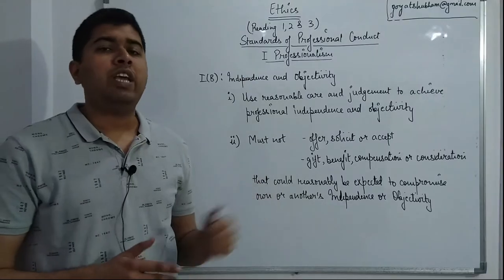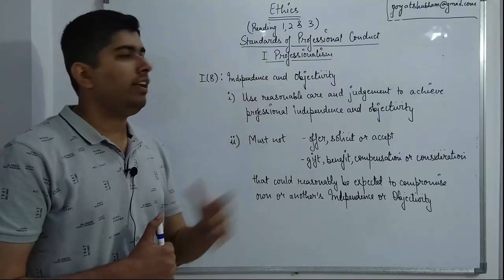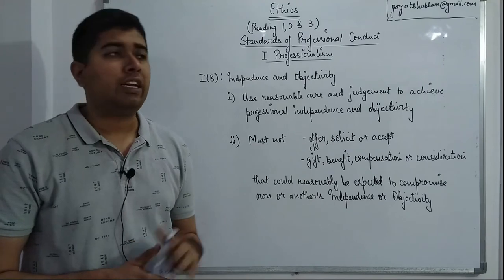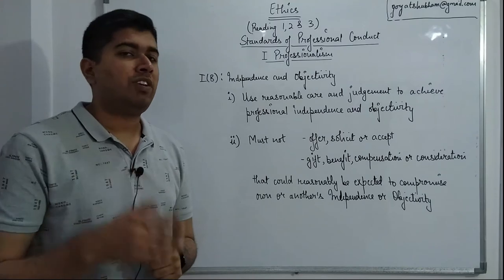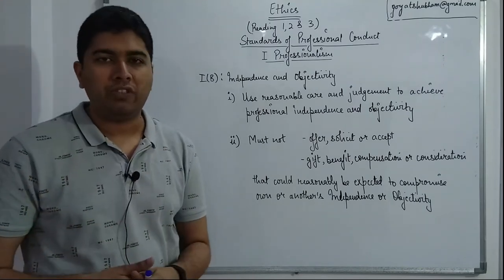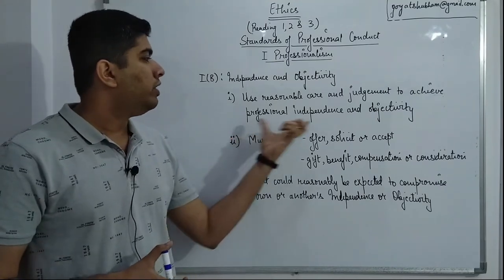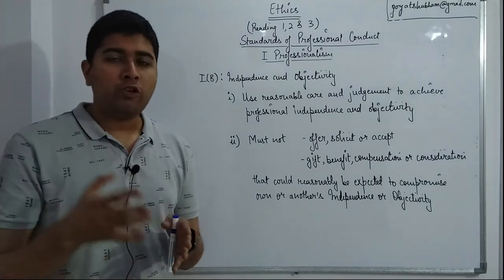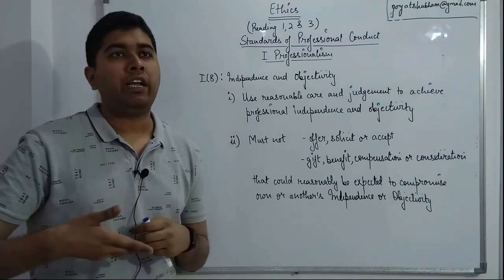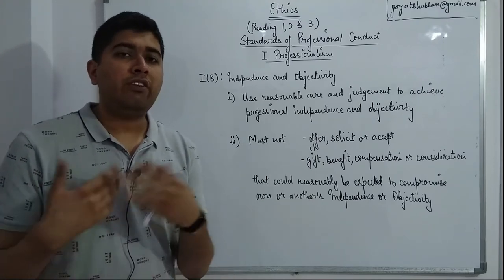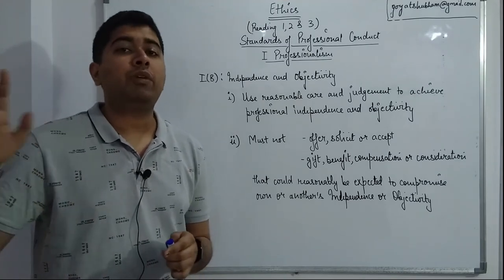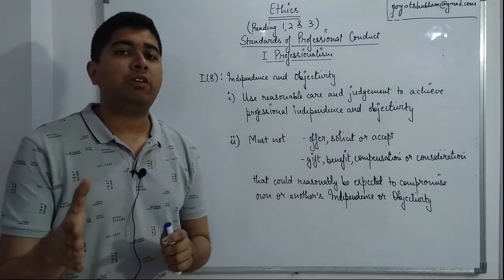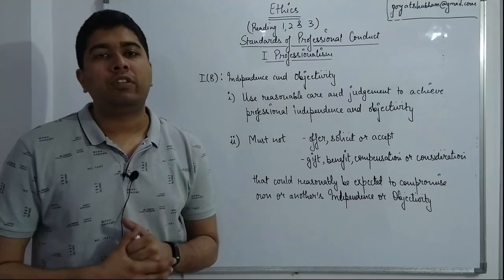Standard 1B is Independence and Objectivity: use reasonable care and judgment to achieve professional independence and objectivity. This is similar to Code of Ethics number three, with the additional term 'objectivity.' Objectivity means being able to analyze both sides of an argument equally — your decision should not be influenced by a previously issued recommendation or by concern about how your reputation might change.